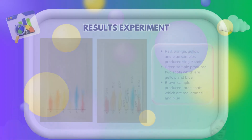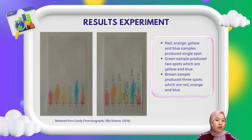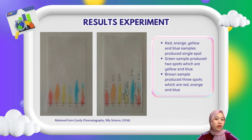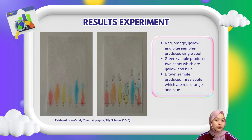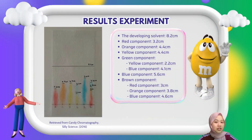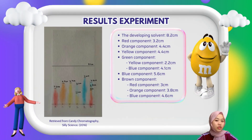Here are the results of our candy chromatography experiment. As shown in the picture, the red, yellow, orange, and blue samples each produced a single spot on the chromatography paper. However, the green sample showed two distinct spots — yellow and blue — while the brown sample separated into three different spots: red, orange, and blue. Let's look at how far each color component traveled.